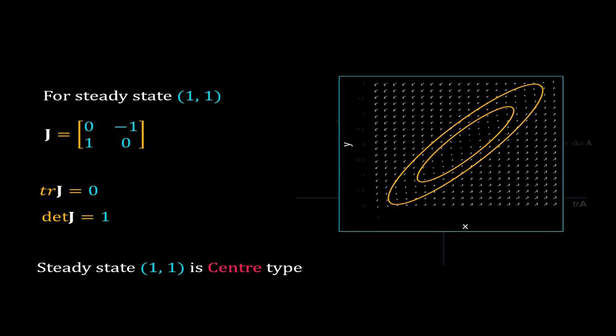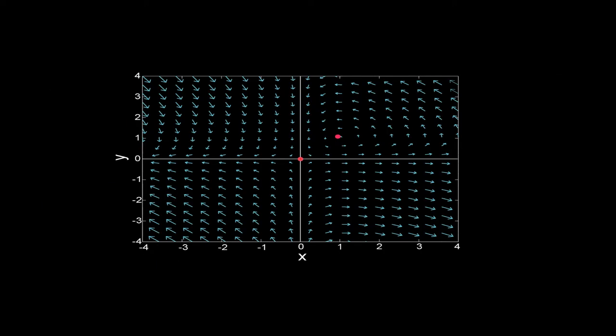One steady state is a saddle and the other one is a center. So the overall phase portrait of this system of ODEs should be a mix of these two types of phase portraits. We have seen the phase portrait of this system earlier. In the positive quadrant, the system will have closed trajectories. That is because the steady state at 1, 1 is of center type. But note, the yellow trajectory is not a proper ellipse. The ellipse has got deformed as the other steady state at 0, 0 is a saddle and it affects the trajectories near it. In the rest of the quadrants, you can easily detect the behavior of a saddle.